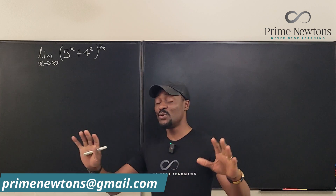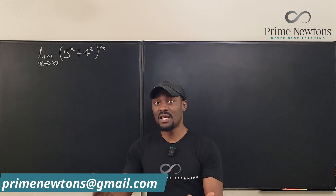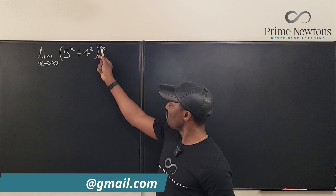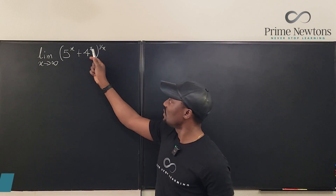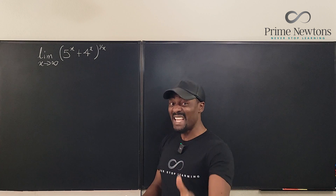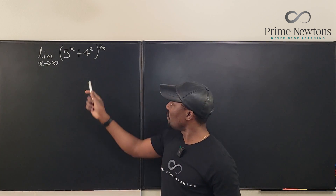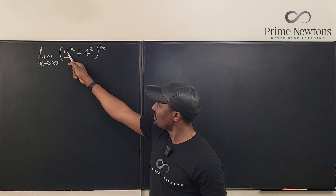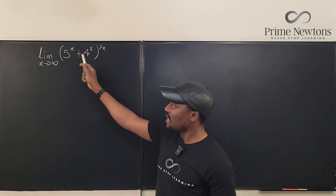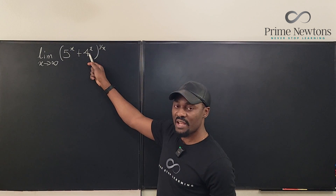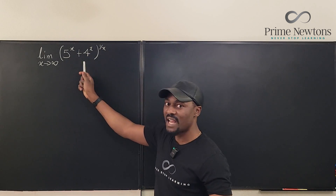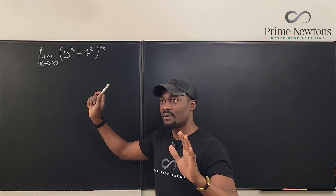Let's try and do some fake algebra. If we distribute 1/x to each of the terms inside — we know we cannot do that, but let's assume we can. The 1/x distributed to the first term: the x cancels, so you get 5. Do the same to the second term, you get 4. So you would expect the limit to be 9.